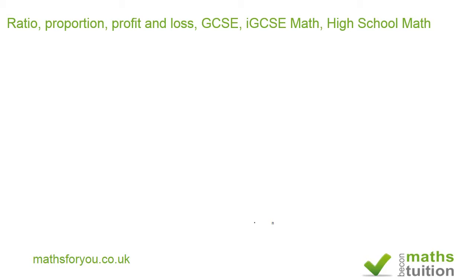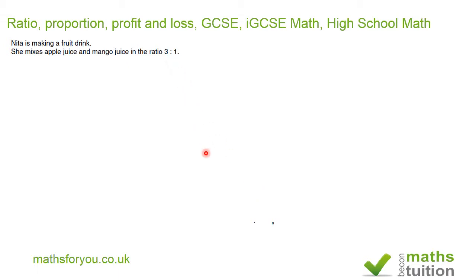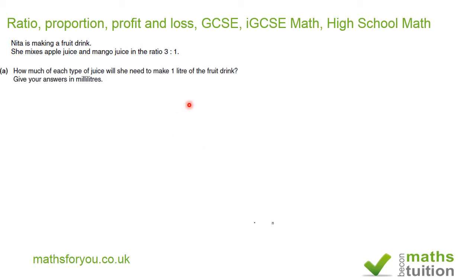The question says: Nita is making a fruit drink and she mixes apple juice and mango juice in the ratio of 3 to 1 by volume. How much of each type of juice will she need to make one litre of the fruit drink? Give your answers in millilitres.